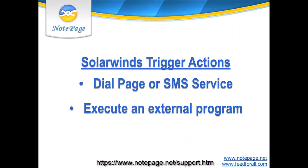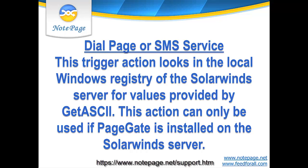It's also important to note that there are two trigger actions in the SolarWinds Orion platform that you can use: Dial page or SMS, and execute an external program. The dial page or SMS service trigger action tells the Network Performance Monitor to look in the local Windows registry of the SolarWinds server for specific entries from PageGate's GetASCII module. To use this trigger action, you must install PageGate on the SolarWinds server, as this trigger action references the local Windows registry on the SolarWinds server.